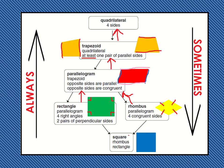Finally, that brings us to our most specific shape, which is a square. A square has four equal sides and four right angles. Opposite sides are parallel. A square is a magical shape because it's all of the quadrilaterals above it. It is a rhombus because it has four equal sides — it's a special type of rhombus. A square is also a rectangle because it has those four right angles and two pairs of perpendicular sides. A square is also a parallelogram, a trapezoid, and a quadrilateral. Now, sometimes rectangles are squares, but that's only if they have equal sides. When we go up, it is always that thing above it.